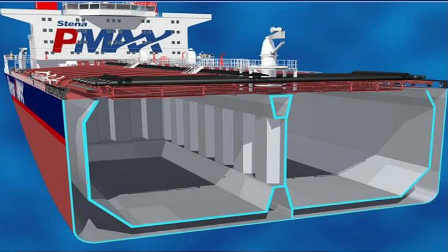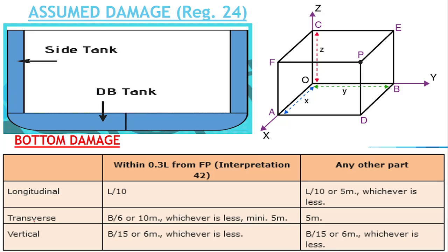Now let's talk about bottom damage. Suppose this is a side plating — we are talking about how much the extent of damage is in the longitudinal, transverse, and vertical directions. Those three directions are what we covered for side damage. Now let's move to bottom damage.